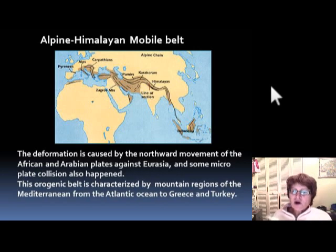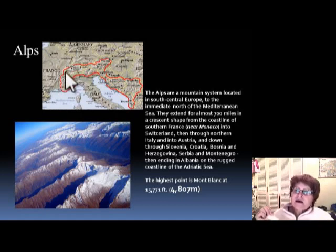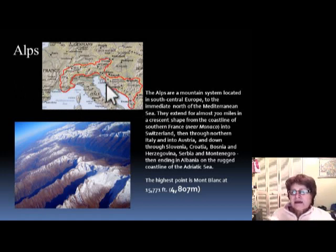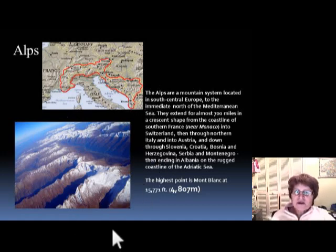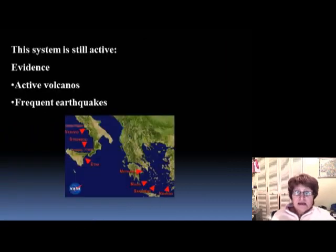This shows the Alps, which include parts of France, Italy, Switzerland, Germany, Austria, Turkey, and Greece. This satellite picture shows the Alps, with close-ups revealing really rugged, very sharp mountains — which tells you they are geologically very young.